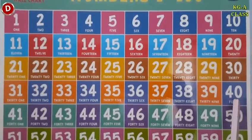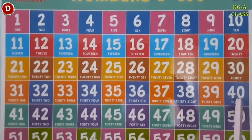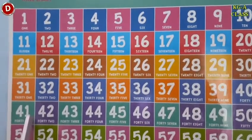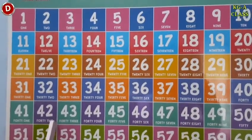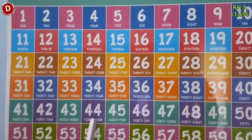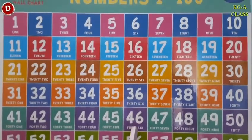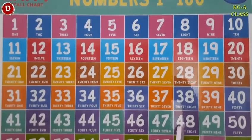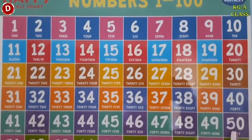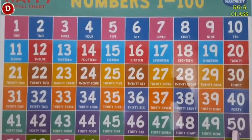And here comes 40 children. After 39 comes 40. And after 40, the next number is 41, 42, 43, 44, 45, 46, 47, 48, 49 and 50. After 49 comes 50.